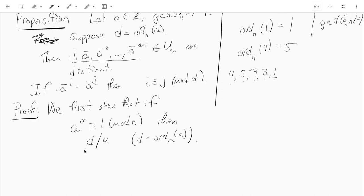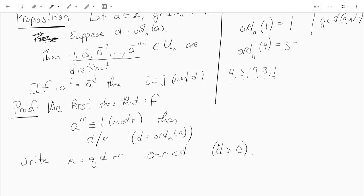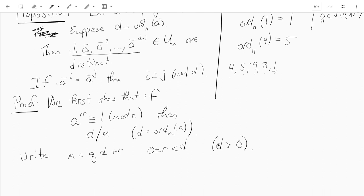So let's suppose that a to the m is congruent to 1 mod n, and we just do as in class, so we divide d into m. So we use the division algorithm. We write m is qd plus r, where r is between 0 and d, and this makes sense. Remember, the definition of order is the least positive integer d, so d is not 0, so we can divide it, and we can take m and divide by d. If d equals 0, this makes no sense, of course.